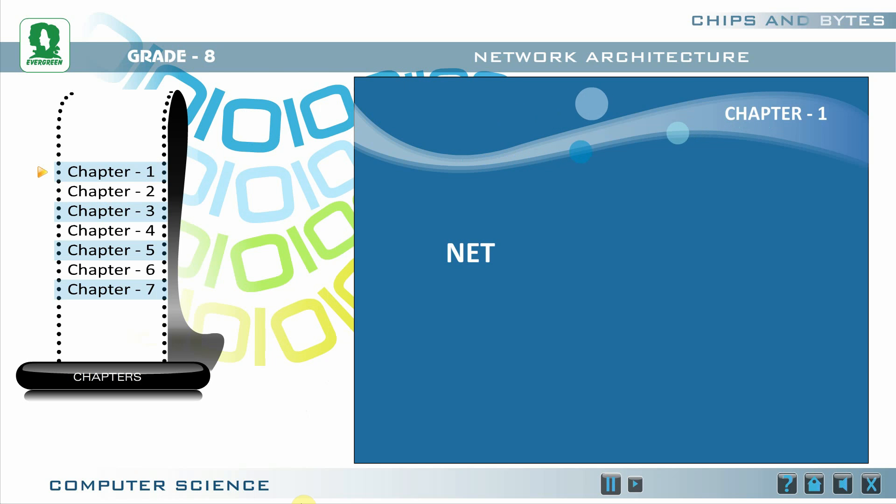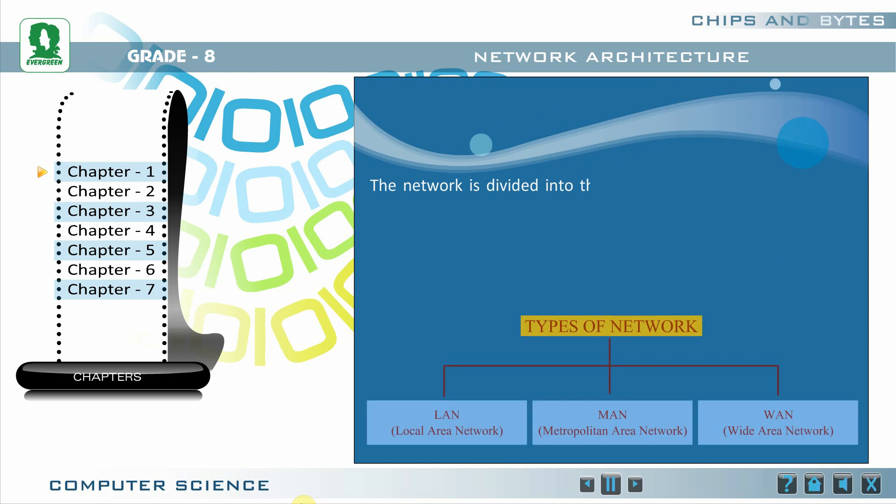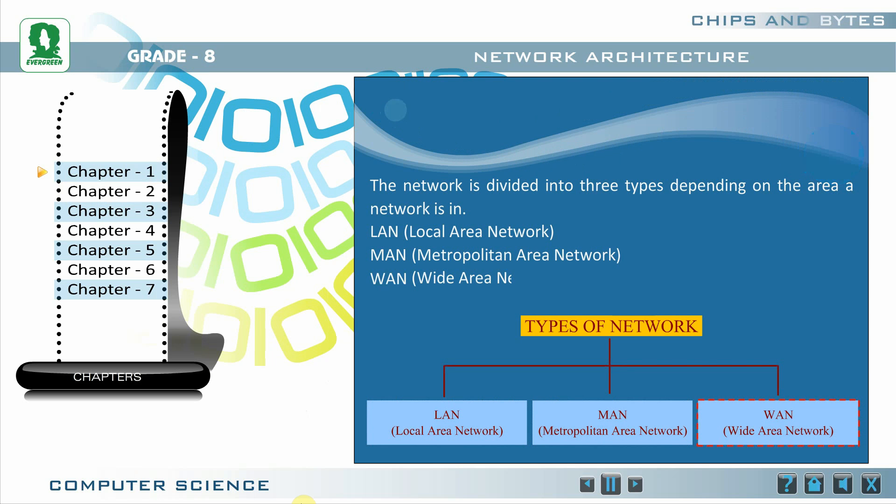Chapter 1: Network Architecture. The network is divided into three types depending on the area a network is in: LAN, MAN, and WAN. LAN stands for Local Area Network, MAN stands for Metropolitan Area Network, and WAN is for Wide Area Network.